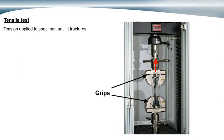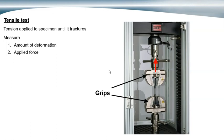With tensile testing, the sample is held between two grips — the bottom grip and the top grip. The top grip moves up at a certain speed, and we measure the amount of deformation of the sample during the test and the applied force. The sample is pulled until it fractures.